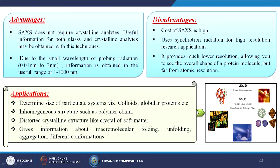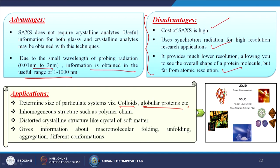Advantages of SAXS: it does not require crystalline analytes — useful information for both glassy and crystalline analytes can be obtained. Due to the small wavelength of probing radiation (0.01 to 3 nanometers), information is obtained in the useful range of 1 to 1000 nanometers. Disadvantages include high cost and use of synchrotron radiation for high-resolution applications; it provides much lower resolution than atomic-level techniques, showing only the overall shape of protein molecules. Applications include determining size of particulate systems like colloids and globular proteins, characterizing polymer chains and distorted crystals, and providing information about macromolecular folding, unfolding, aggregation, and different conformations.